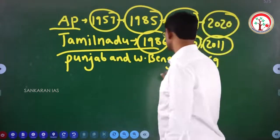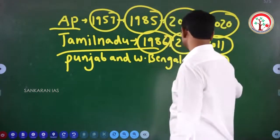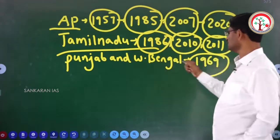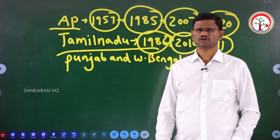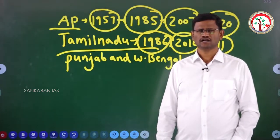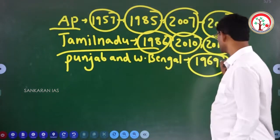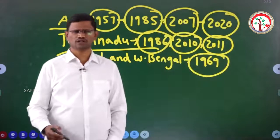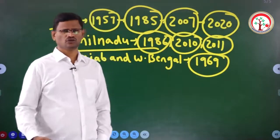The other two states which had a legislative council till 1969 were Punjab and West Bengal. So in Punjab and West Bengal, till 1969, they had a bicameral state legislature. In the year 1969, the legislative council was abolished in these two states.